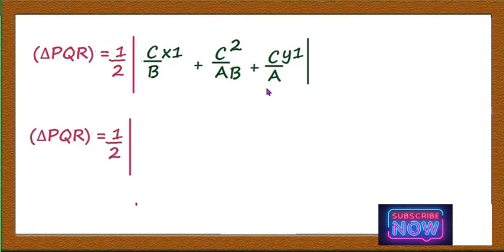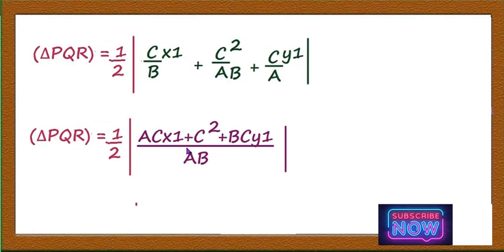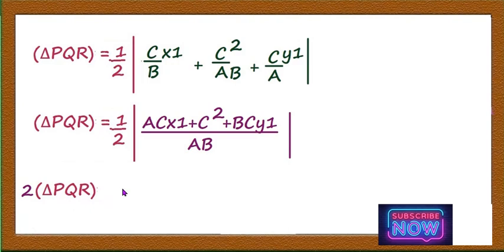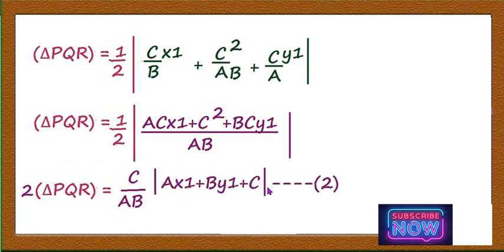Taking LCM as ab, the numerator becomes acx1 + c² + bcy1. So 2 × area of triangle PQR = (c/ab) × |ax1 + by1 + c|, taking c common. Call this equation 2.